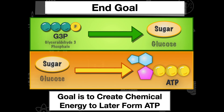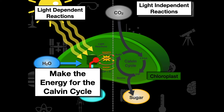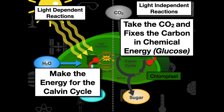To wrap up: the light-dependent reactions make energy for the Calvin cycle — producing NADPH and ATP. That energy takes CO2 and fixes the carbons into sugar, giving us glucose. We input water and output oxygen on the light-dependent side; we input CO2 and output sugar on the light-independent side. The light-dependent reactions power the Calvin cycle, which makes the sugar — all within the chloroplast.